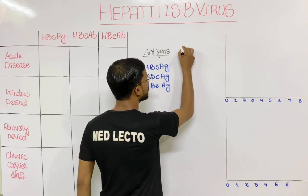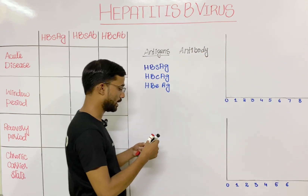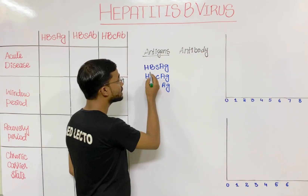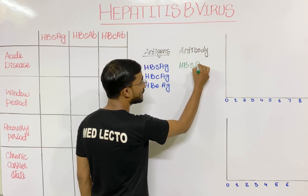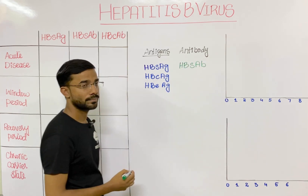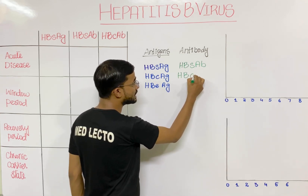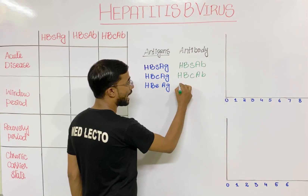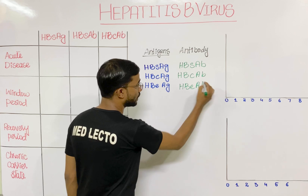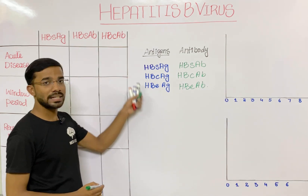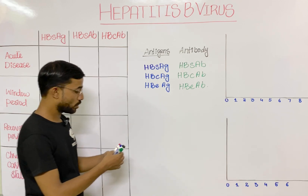Against these three antigens, you will see corresponding antibodies: Hepatitis B surface antibody, Hepatitis B core antibody, and Hepatitis B e antibody. So there are basically three antigens and against them three antibodies.